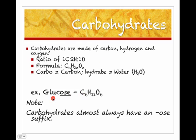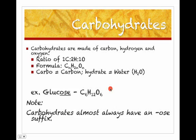For example, glucose is C₆H₁₂O₆. Notice that's a 1 to 2 to 1 ratio. An easy way to identify a carbohydrate by name is they usually end in -ose. So glucose, lactose — you may have heard of that for people who are lactose intolerant.